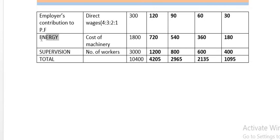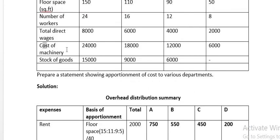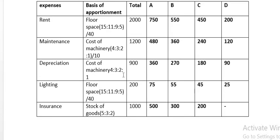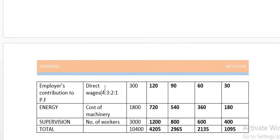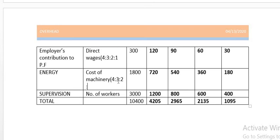Energy is apportioned on the basis of cost of machinery, which is 24,000, 18,000, 12,000, and 6,000. Removing the zeros gives a ratio of 4:3:2:1. The total energy cost of 1,800 is distributed to all four departments on this ratio.